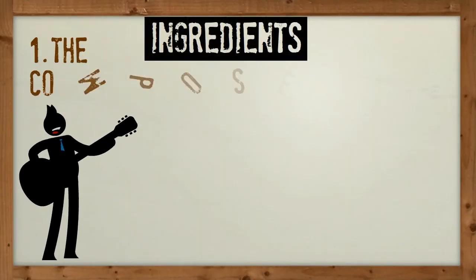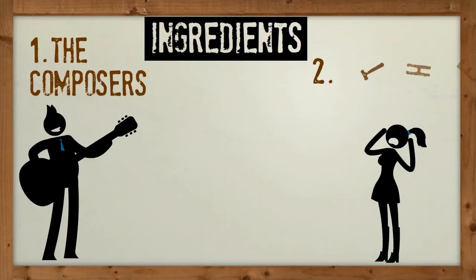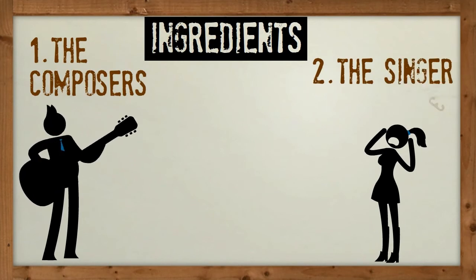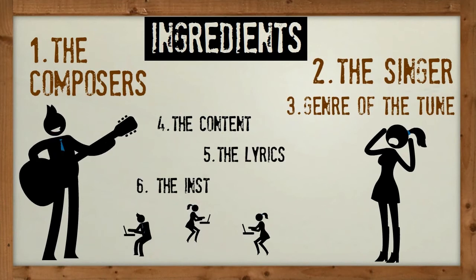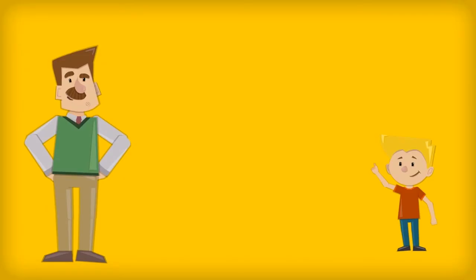The ingredients are... Number one, the composers and musicians. Number two, the singer of the month. The singer picks the genre. But we need your help to find the filling, the dressing, and the spices for this Tune Sandwich.